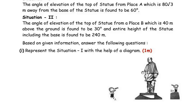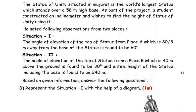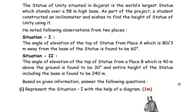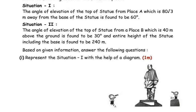Let us understand the question. The Statue of Unity is the world's largest statue and stands on a 58-meter-high base. A student wants to find the height of the statue from two different points. In situation 1, he stands at point A, looks at the top of the statue, and his eyes make an angle of elevation of 60 degrees. He is standing at a distance of 80√3 meters from the base.